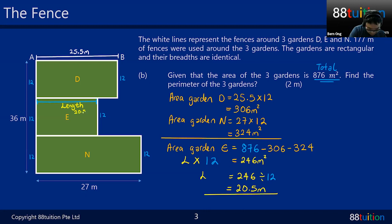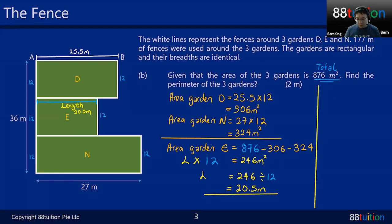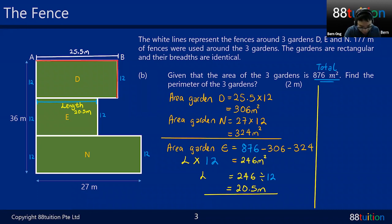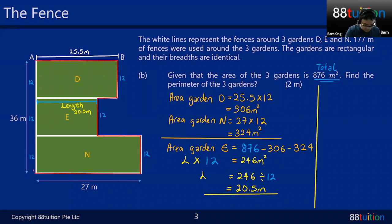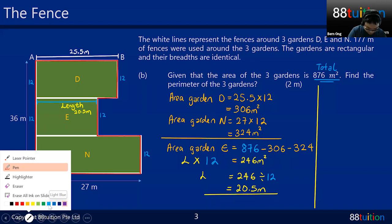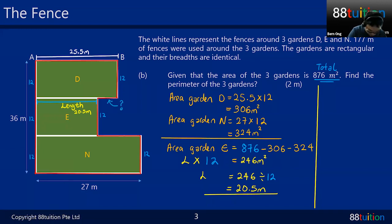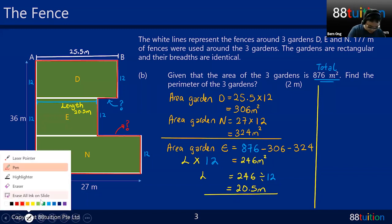To find the perimeter — the red outline — I need all the side lengths. I have 12, 27, and 36 already. But I'm missing two portions: I'll call them the blue question mark and the red question mark. I need to find both of these before I can calculate the full perimeter.